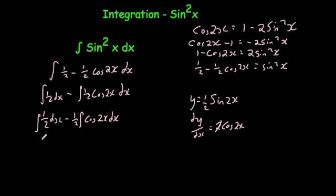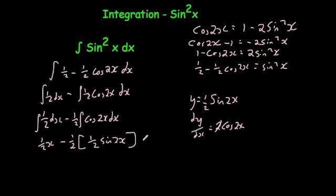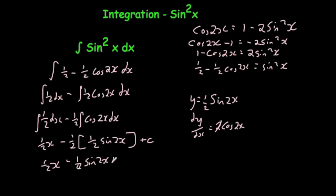Integrating both terms, you get one half x minus one half times one half sine 2x plus c. Some people would go straight from the integral of cos 2x to sine 2x, then divide by the differential of the inside which is 2, giving one half sine 2x. Simplifying, you get one half x minus one quarter sine 2x plus c.